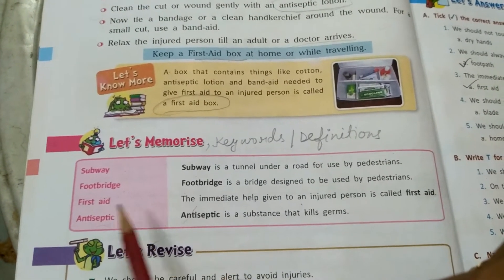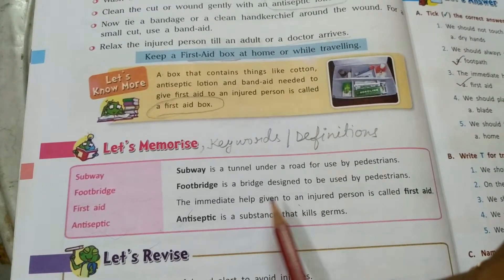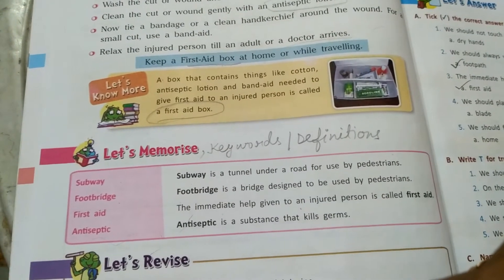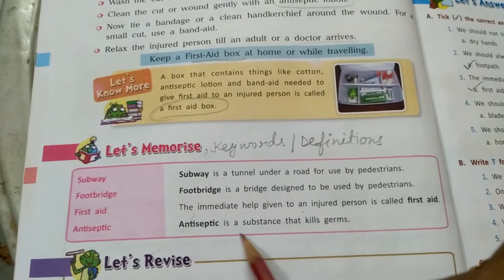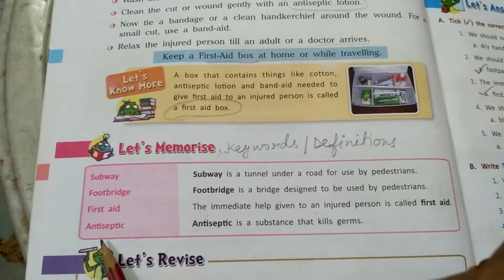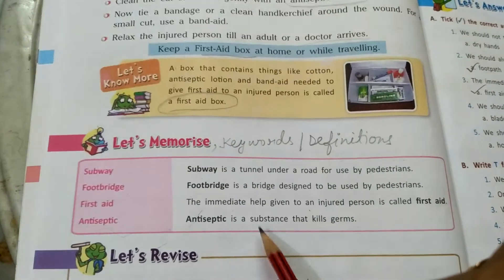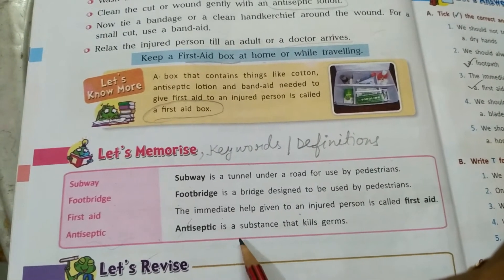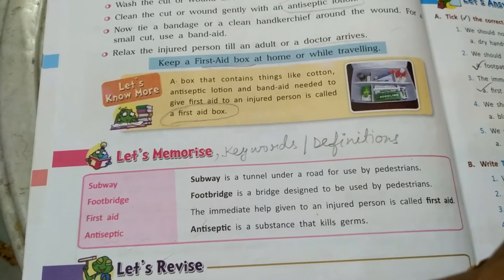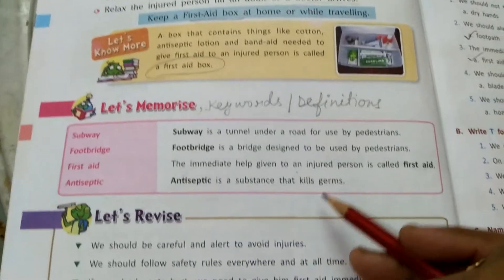Next, very important: what is first aid? First aid is the immediate help given to an injured person. Immediate means at once, quickly. Then, antiseptic: an antiseptic is a substance that kills germs. It is against germs — things like antiseptic liquids such as Dettol and Savlon that we use at home to help kill germs.